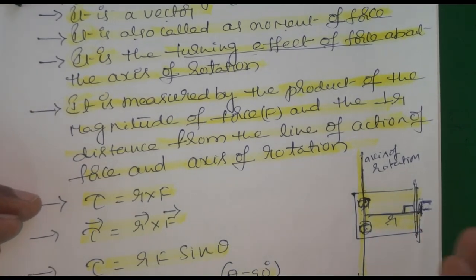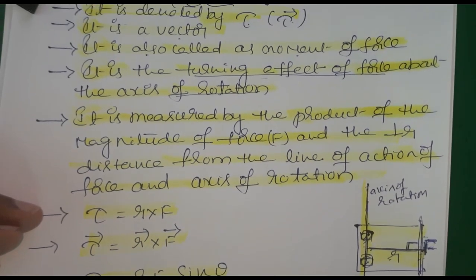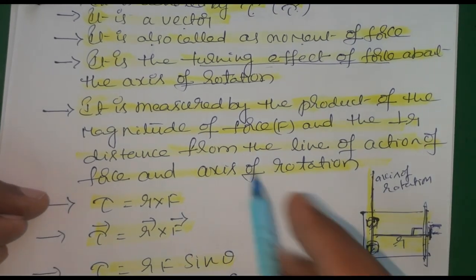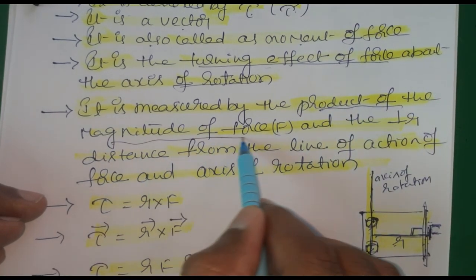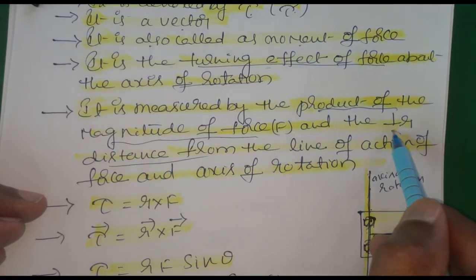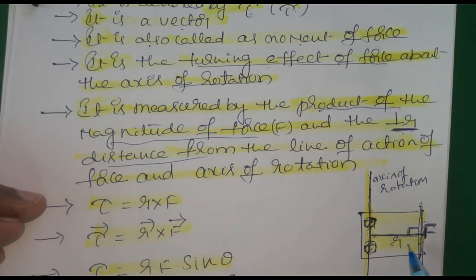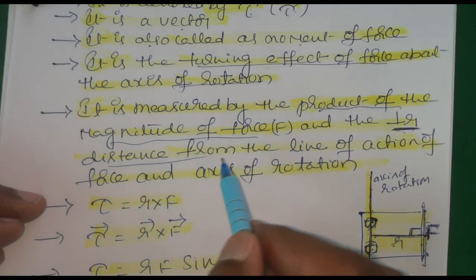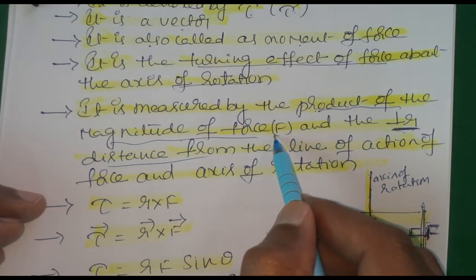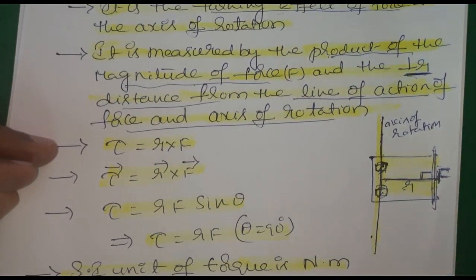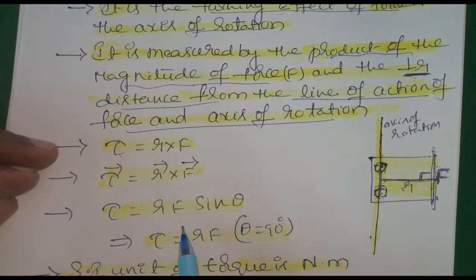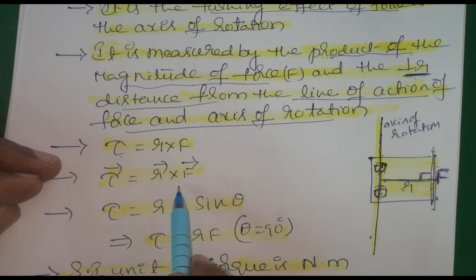So it is the turning effect produced by a force. When you apply force in any direction, this moves forward or backward. That's why turning effect is produced. Now the definition: It is measured by the product of magnitude of force and the perpendicular distance. Here the perpendicular distance is r and force is F. It is measured by the product of magnitude of force and perpendicular distance from line of action of force and axis of rotation.